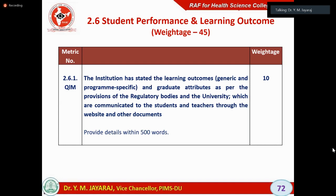So, graduate attributes, program outcomes, and course outcomes — all of them are called learning outcomes. What do you expect after MD from a student? What do you expect after BAMS from a student? Regulatory bodies also tell you what competencies are expected. You should list them, tell the students, ensure that the students achieve them, and communicate them to students in advance through a handbook, website, or notification. If you can document this properly, you get marks. Otherwise, you lose marks.